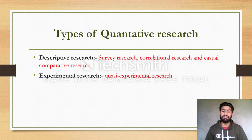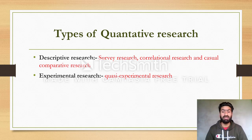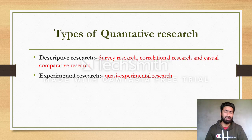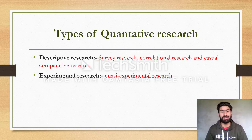Under descriptive research, the first subtype is survey research. The second is correlational research, which studies the relationship between variables quantitatively. The third is causal-comparative research. These three together form the descriptive type of quantitative research.